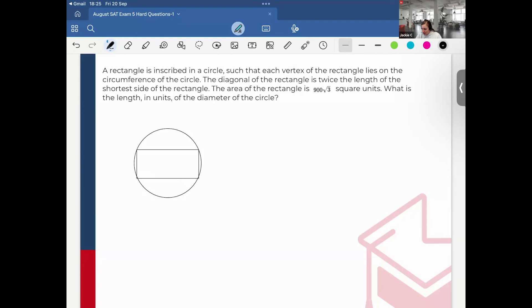The diagonal of the rectangle is twice the length of the shortest side of the rectangle. I'll make this x, this would be 2x, and the area of the rectangle is 900 root 3 square units. What is the length in units of the diameter of the circle? I know area equals length times width, so I can say a times x is equal to 900 root 3. Likewise I can use Pythagorean theorem and do a squared plus x squared is equal to 2x squared.